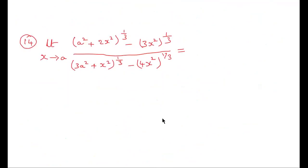Next is a limits-related problem. First, substitute the limit directly. You will get the 0/0 indeterminate form. When you get 0/0, apply L'Hôpital's rule — differentiate the numerator and denominator once with respect to x, then take the limit.